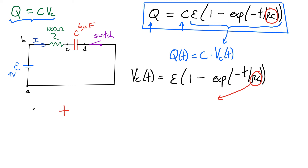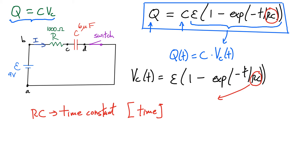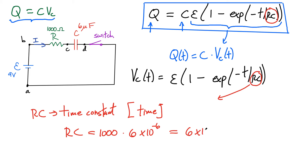This RC product is what we define as the RC time constant τ. By its name, the product of resistance and capacitance must have units of time — because you can't have any units appearing inside an exponential function, so if the numerator is measured in seconds, the denominator must also be in seconds. For our particular circuit, the resistance is 1000 ohms and the capacitance is 6 microfarads (6×10⁻⁶ F), giving τ = RC = 6×10⁻³ seconds = 6 milliseconds.